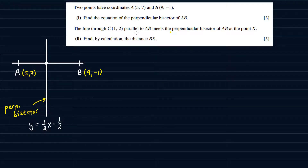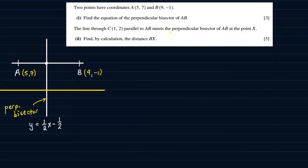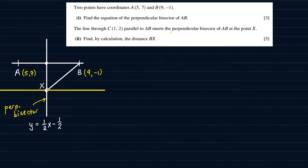They are telling us that there is a line which is parallel to AB — let's draw that line here. It's parallel to AB and it meets the perpendicular bisector of AB at the point X. We need to find by calculation the distance BX, which is this distance here.